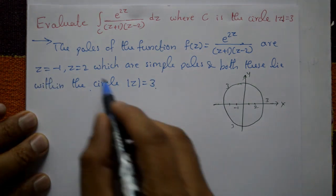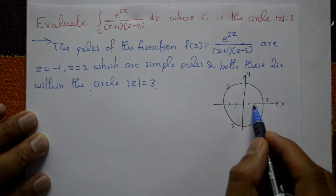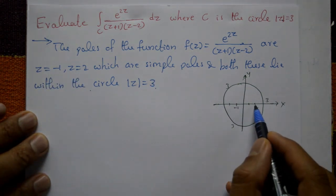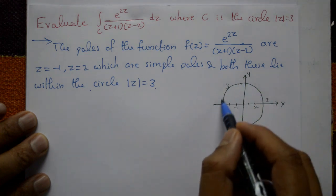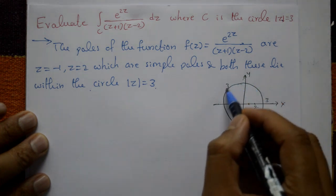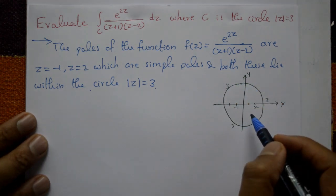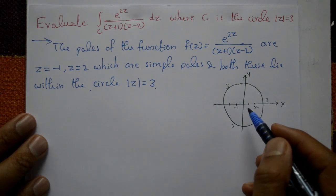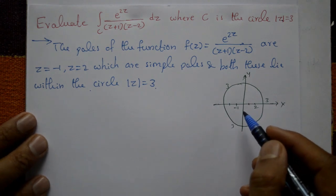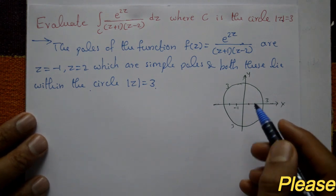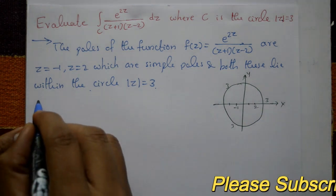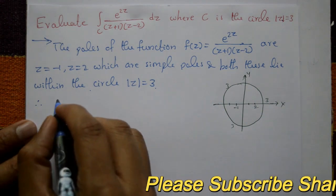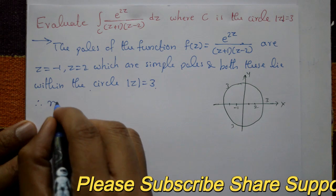Both z = -1 and z = 2 lie inside the radius, that is, inside the circle |z| = 3. Therefore, we apply Cauchy's Residue Theorem.